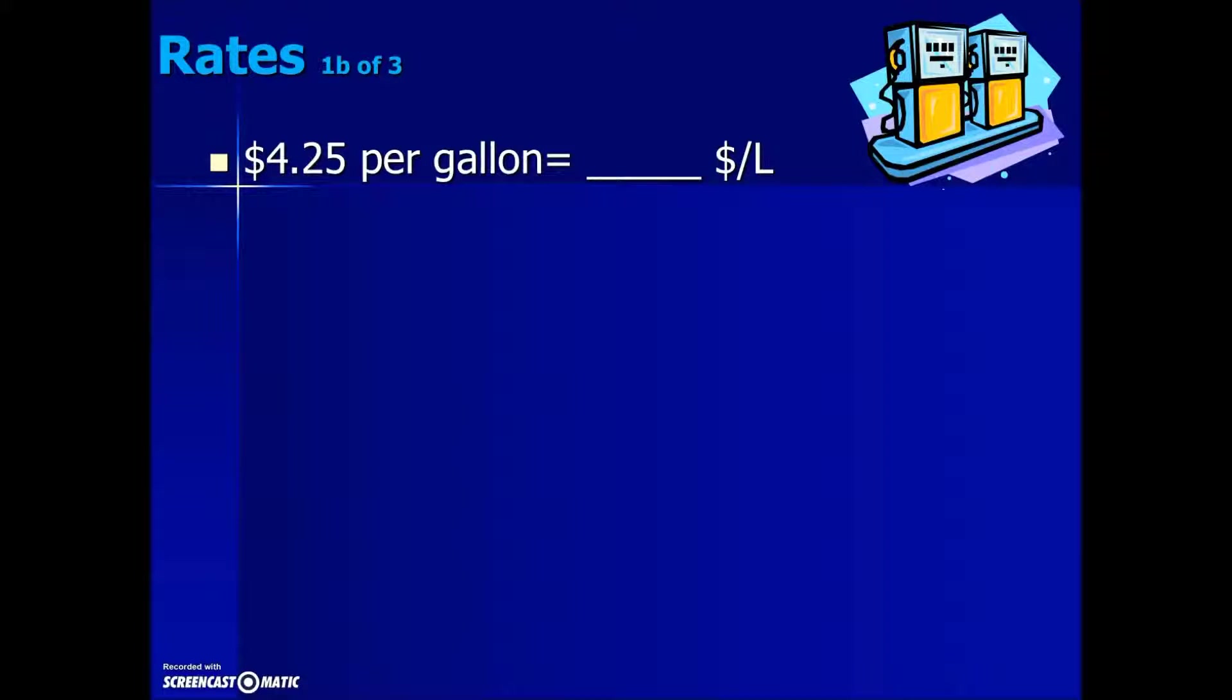In this next example, we're given something that costs $4.25 per gallon and asked to convert it to an equivalent price per liter. Here, our rate that we have is in price per quantity. The original problem is giving us $4.25 per one gallon, the implied one. Having that one there helps us with setting up our fraction. We want to convert money per one gallon into money, which doesn't need any conversion, per liter, which is where the conversion comes into play.